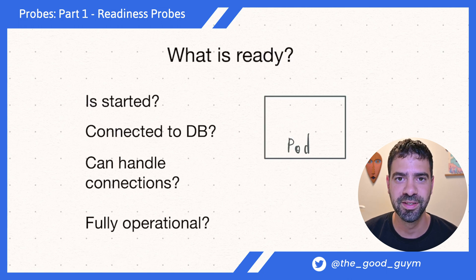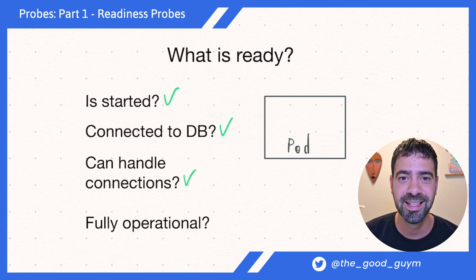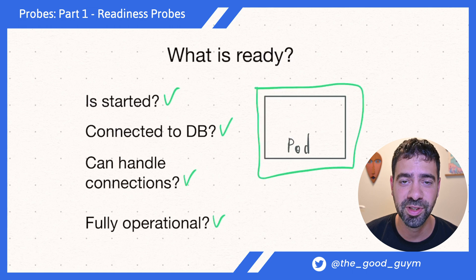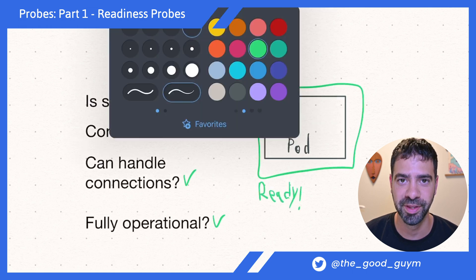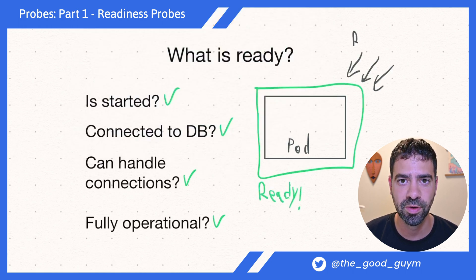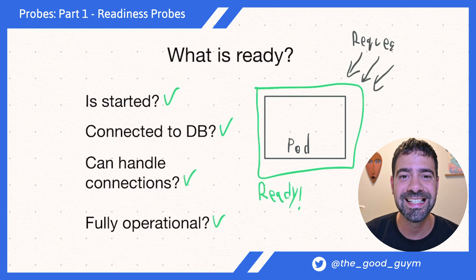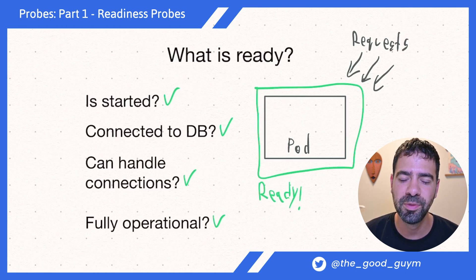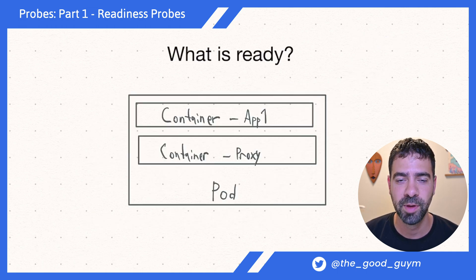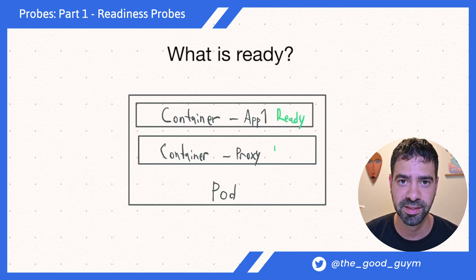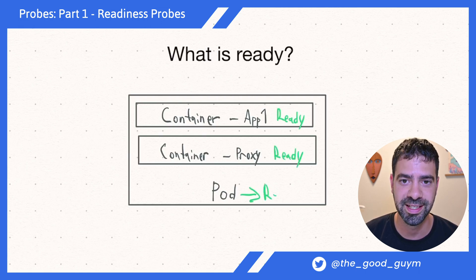What does it mean that a pod is ready? It means that this pod is ready to do its job and it's in perfect condition, so Kubernetes knows that it can send traffic to it. But how does Kubernetes mark this pod as ready? In a pod we have multiple containers, and only when all the containers are in a ready state can the pod be marked as ready.